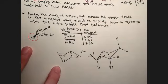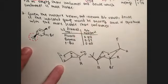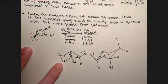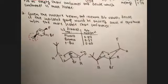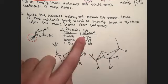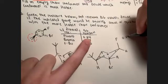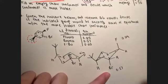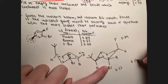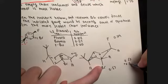That's the first chair conformer. For the second, switch all groups: fluoro and bromo become equatorial, tert-butyl becomes axial. Now calculate delta G for both. On the first structure, fluoro is axial (0.24 kcal/mol) and bromo is axial (0.57 kcal/mol) — no tert-butyl interactions since it's equatorial. Total: 0.57 + 0.24 = 0.76 kcal/mol.